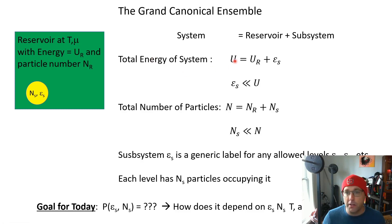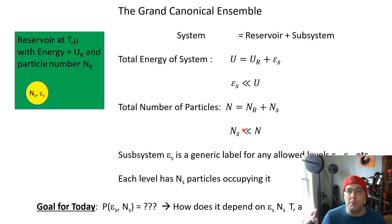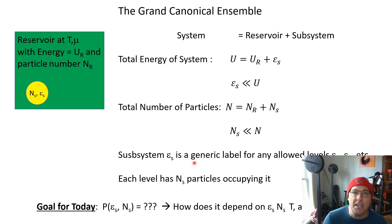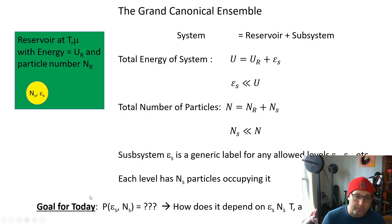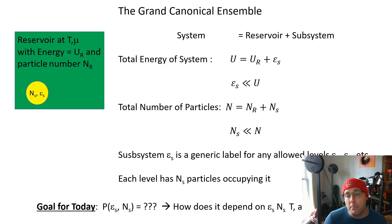We write the total energy of the system as the sum of the reservoir and the subsystem, where the subsystem energy is very small, and the same for the number of particles — the number of particles in the subsystem is always much less than the total. E_s is a generic label for any of the accessible levels in the subsystem, and each level E_s has a corresponding n_s. Our goal is to determine the probability that we have a level E_s with particle occupation n_s.